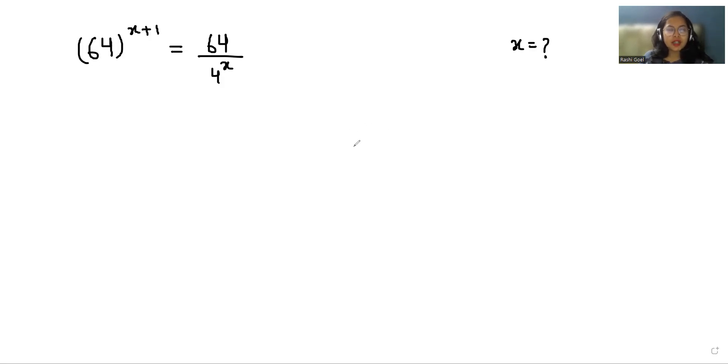So let's start with today's video solution. 64 as we know can be written as 4 times 4 times 4, that is 4^3. So here I'm going to replace it with (4^3)^(x+1) equals (4^3)/(4^x).